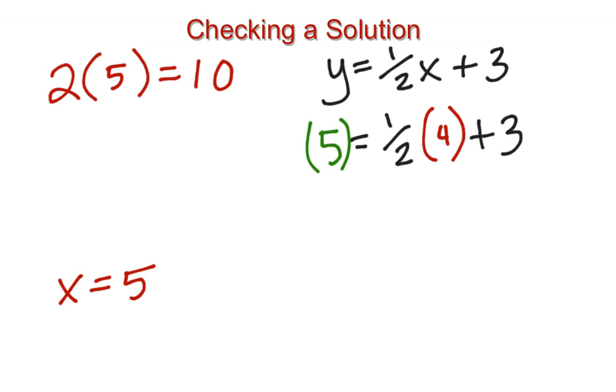For example, here I have substituted the values 4 for x and 5 for y. If I simplify this expression, I will get 5 is equal to 1 half times 4, which is 2, plus 3. And we all know 2 plus 3 is 5, so this actually works out to a true statement.